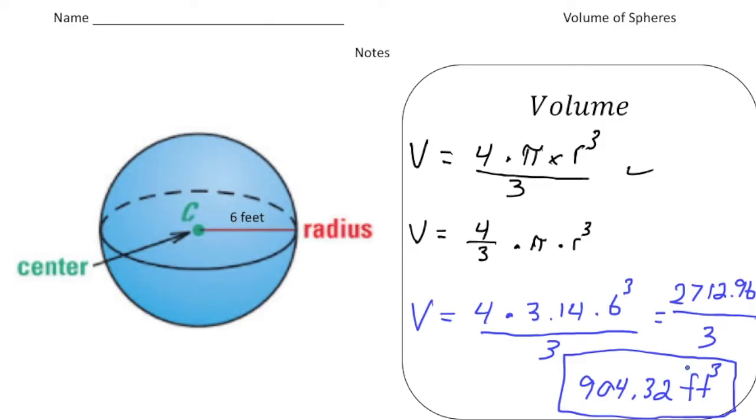So to find the volume of a sphere, it's pretty easy. You just do four times pi times radius cubed, and then you divide it by three. Don't forget, if you get the diameter of a sphere, you got to take that and divide it in half to get the radius.